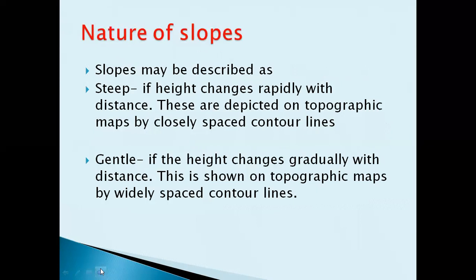Slopes may be described as steep or gentle. It is a steep slope if the height is changing rapidly with distance. On a topographic map, we can identify steep slopes by closely spaced contour lines. A gentle slope is one where the height is changing gradually with distance, shown on a topographic map by widely spaced contour lines.